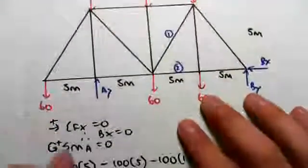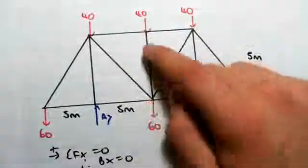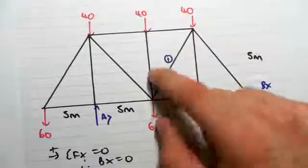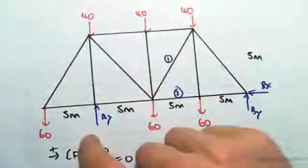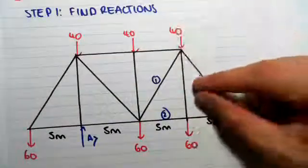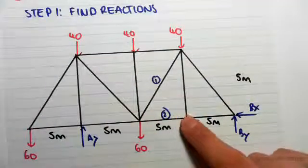If we take moments about A, that one doesn't have a lever arm, so we have 60 by 5. That's going to be positive. 40 plus 60, they're acting in the same line with the same lever arm, so we add them. We have 100 by 5, it's going to be going clockwise so it's negative.